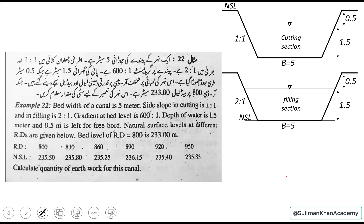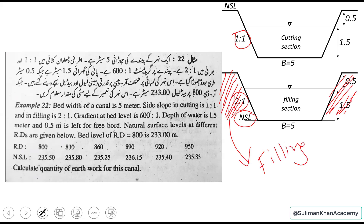For the cutting section, the side slope is 1:1, and for filling it is 2:1. To confirm whether a section is cutting or filling, you look at the NSL — the natural surface level. Here we have constructed a bank above the NSL, which means this section is in filling.